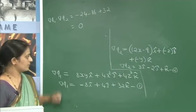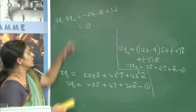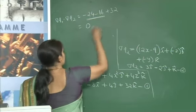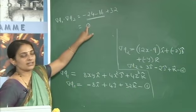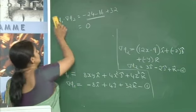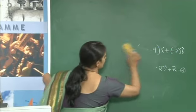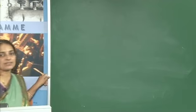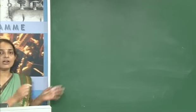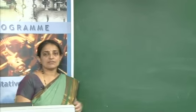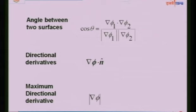To show two surfaces intersect orthogonally, it is sufficient to show the dot product between their normals is zero. This concludes this unit on vector calculus covering grad φ, directional derivatives, and angle between surfaces. Thank you.